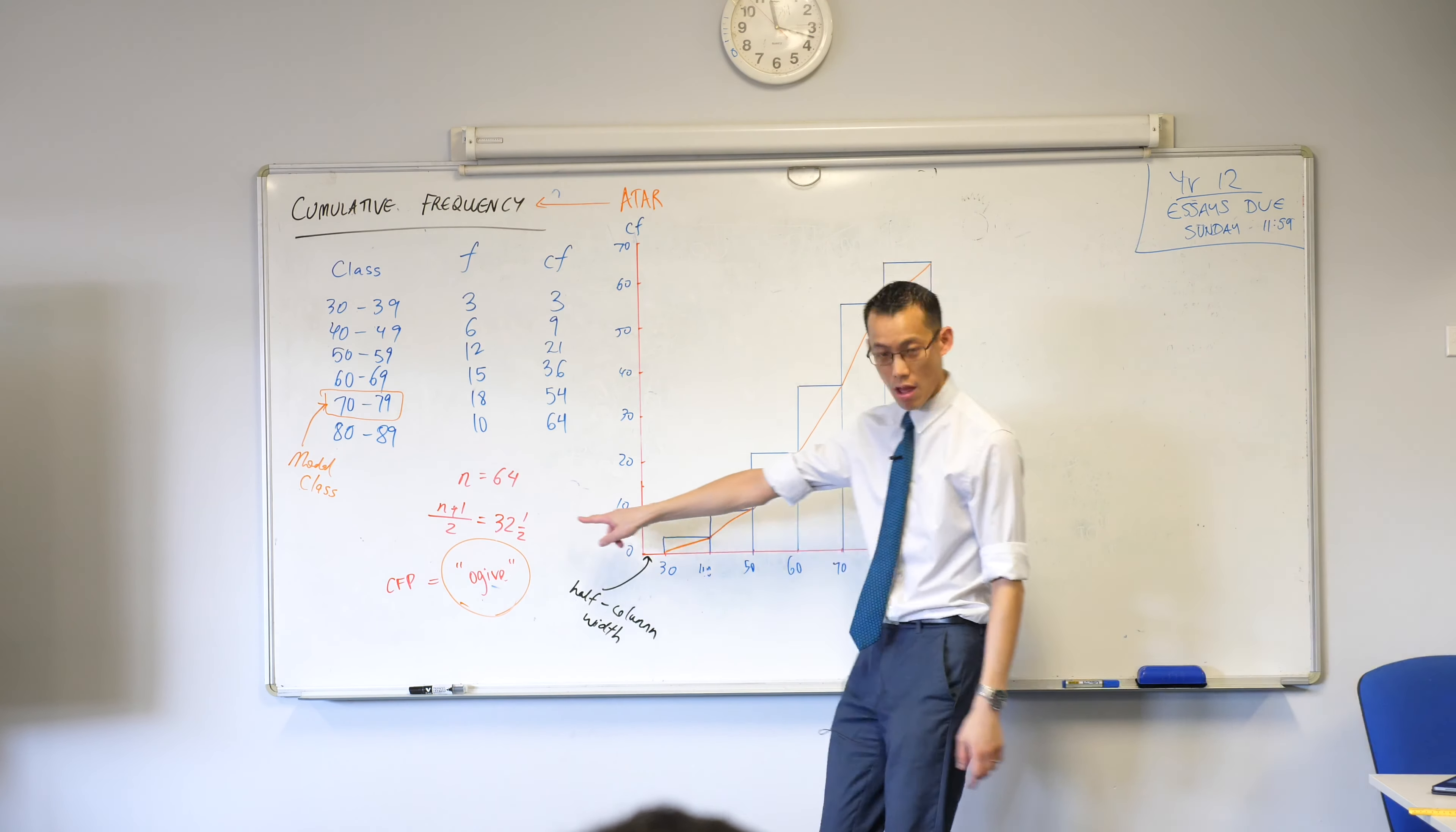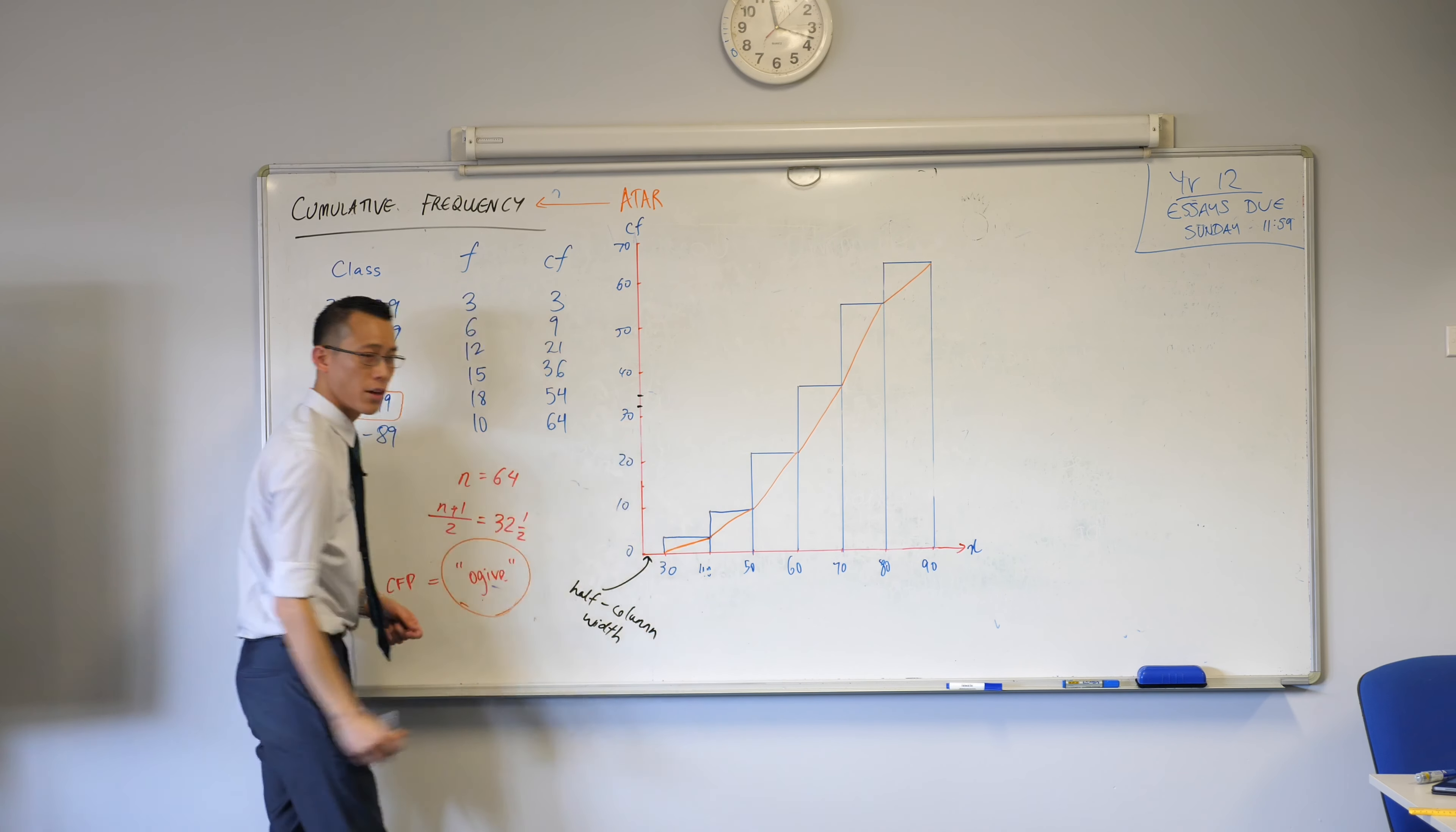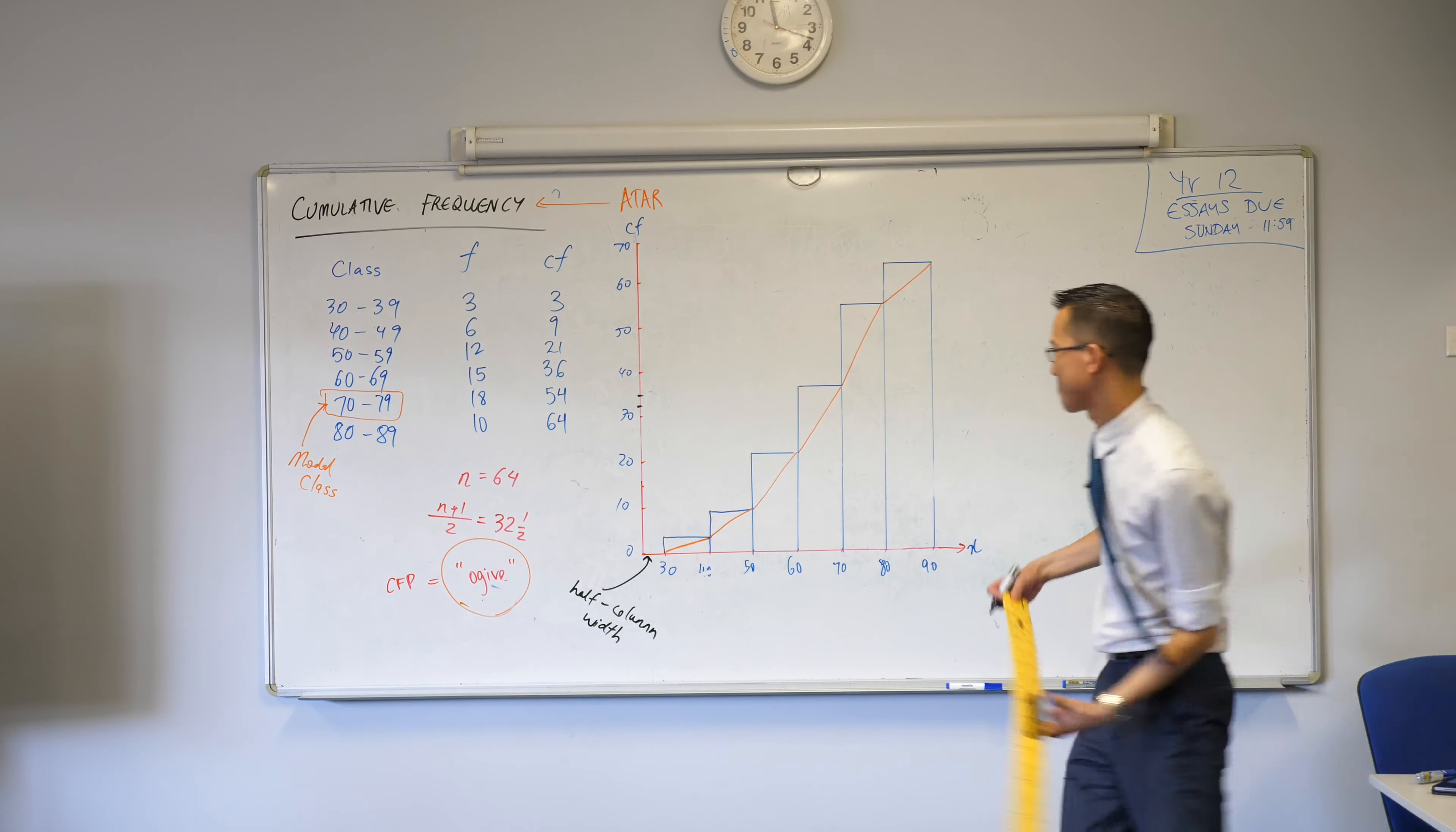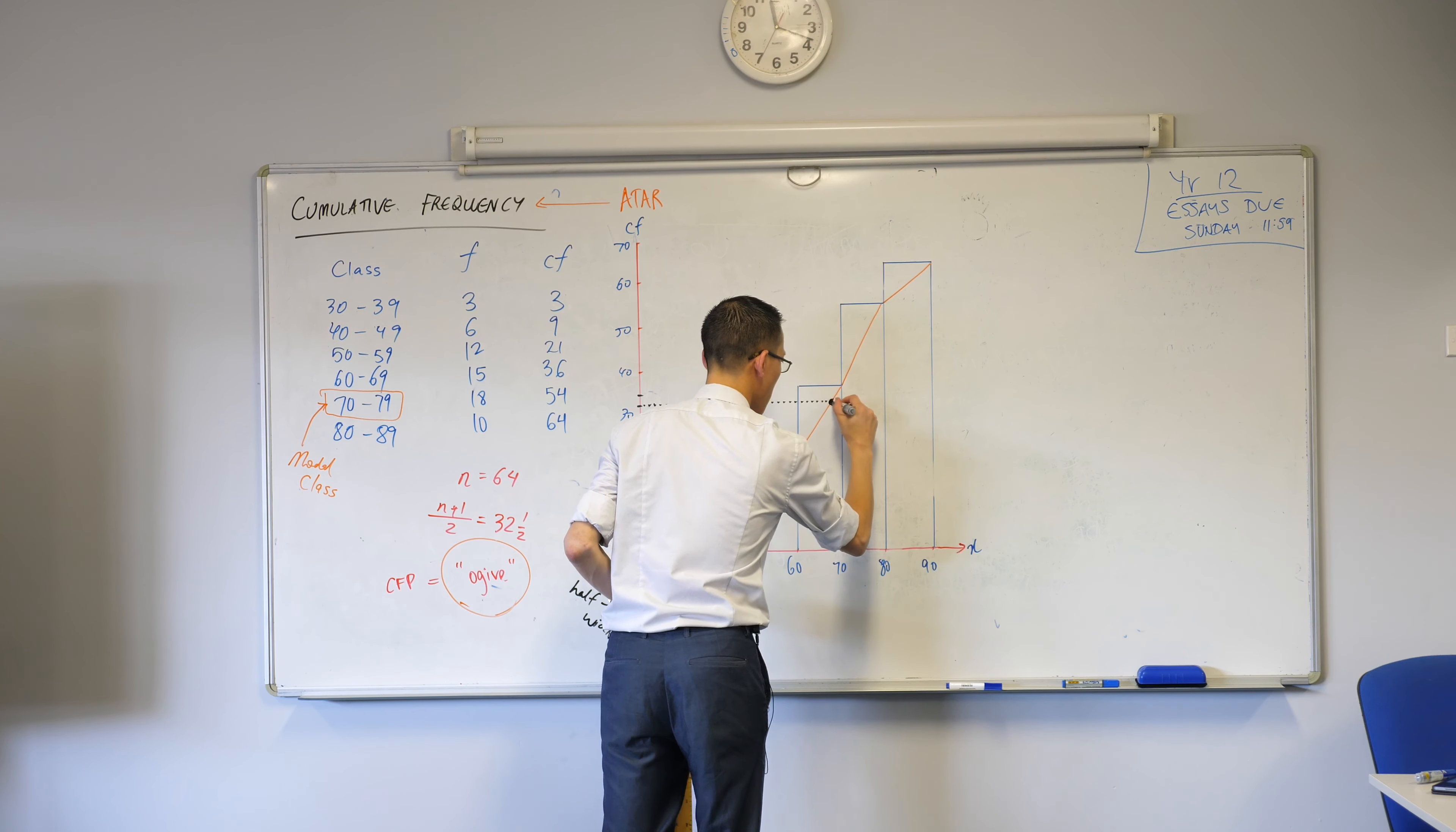We know it's supposed to come in at what position? 32 and a half, between 32 and 33. Well, you can find that on your vertical scale. 32 and a half, find 32 and a half, that's 35, so that must be 32 and a half. And then we can draw across to where it meets the ogive, where it meets the cumulative frequency polygon. Go ahead and do that. I'm going to do it with my ruler because I don't trust myself. Don't eyeball this. Do it precisely, you'll see why in a second.